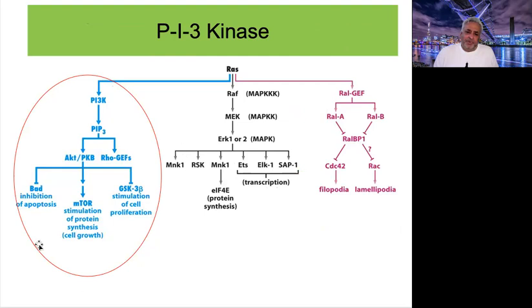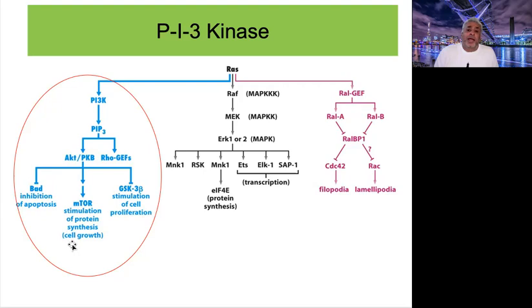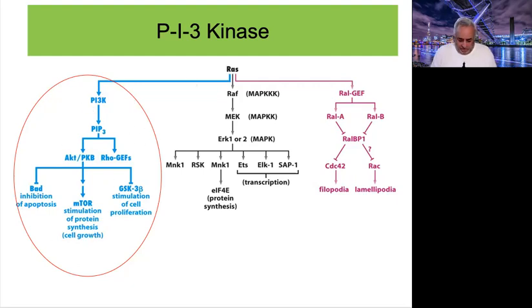The second RAS branch is the PI3 kinase pathway, which leads to overlapping and new cell behaviors such as inhibition of apoptosis. When activated normally, this pathway prevents the cell from activating apoptosis during proliferation, increases cell size (cell growth), and initiates the cell cycle. To put these together: if you want a cell to divide, you need to turn on the cell cycle, have the cell grow in size during G1 and G2, and prevent the suicide program from killing the cell during this process.